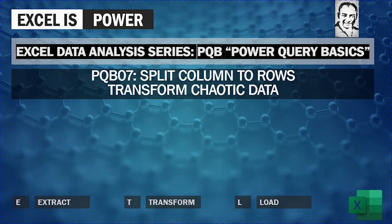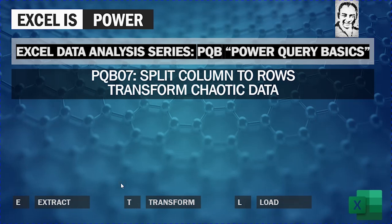Welcome to a new video from the Accelerator Analysis series PQB, or Power Query Basics. This video is PQB 07: Split Columns to Rows. In the previous videos we discussed how to extract data from the same workbook, another workbook, CSV or text files, folders, Access database, and the internet. If you want to watch the series from the beginning, you can find the link in the description section.